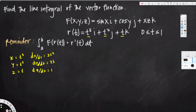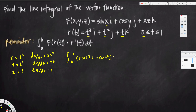Now we can write our integral. The limits of integration are 0 to 1. We write the f(r(t)) function by taking f(x, y, z) and replacing x, y, z with t³, t², and t. This gives us sin(t³)i plus cos(t²)j, and instead of xz we multiply t³ and t, giving us t⁴ in the k direction.